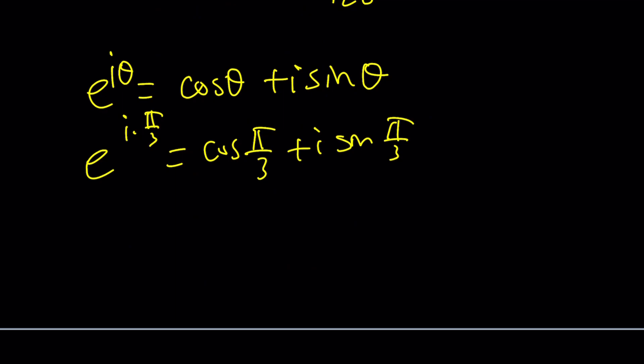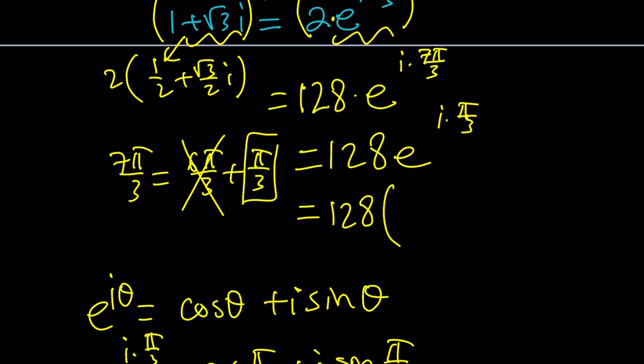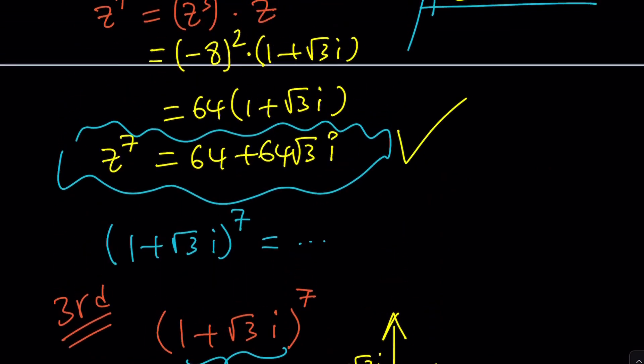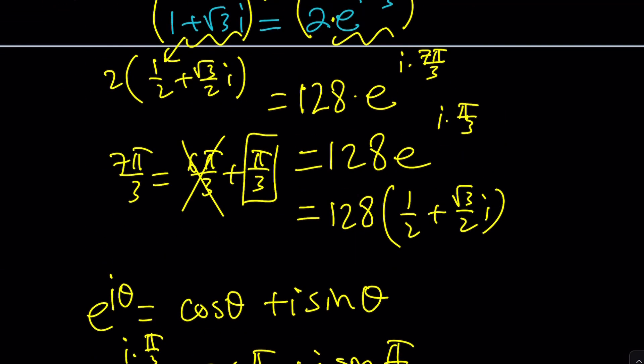Therefore, E to the power I times pi over three is going to be cosine pi over three plus I sine pi over three. And cosine pi over three is basically cosine 60, which is sine 30, which is one half. And this is root three over two I. And when you multiply by 128, guess what? You're going to get the exact same answer that you got here. 64 plus 64 root three I.